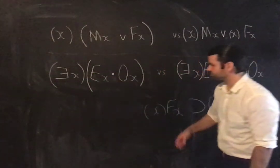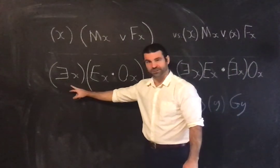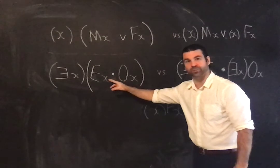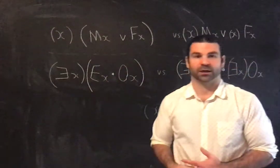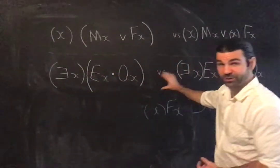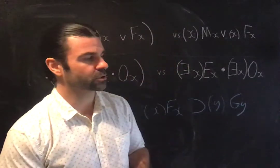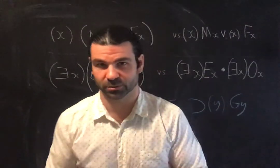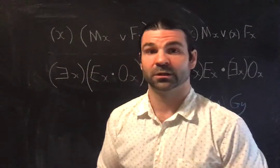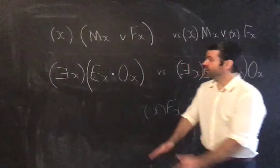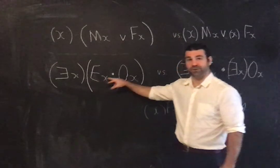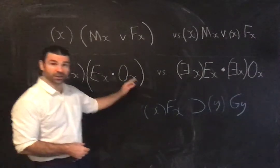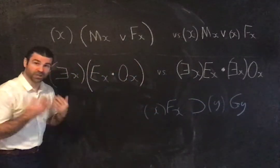Now let's compare an existential statement in quantifier form with a similar-looking conjunction. Let EX be 'x is an even number' and OX be 'x is an odd number.' The difference between these two formulas will come out in Unit 15, which gives a sample proof to illustrate existential instantiation and why it is one of the hard rules — as opposed to the easy rules — requiring you to flag the letter you are instantiating over.